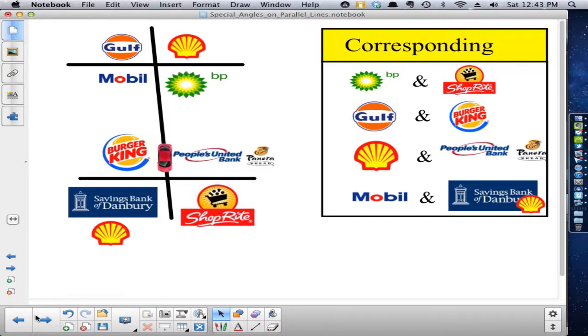What down here corresponds with Mobil? There is another Shell there. There's also the Danbury Savings Bank or Savings Bank of Danbury right there. Those are the establishments that are sort of located at this part of this intersection, the lower left-hand corner. And up at this intersection is Mobil at the lower left-hand corner. So, does it make sense what corresponding would be? When we talk about geometry, we're talking about the angles here, they would be corresponding.